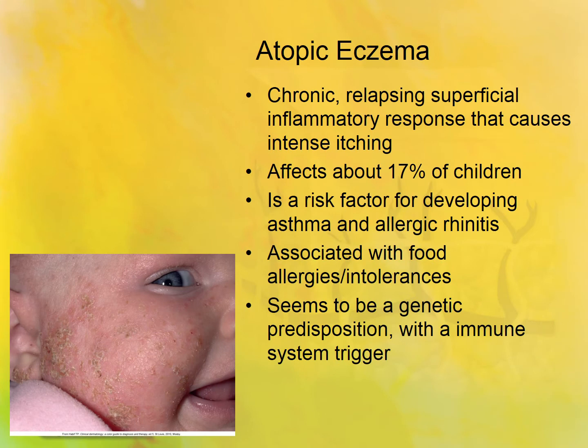Atopic eczema. This is a chronic relapsing superficial inflammatory type response. It causes a lot of itching and irritation for children. Remember the triad between asthma, allergic rhinitis, food intolerances, and eczema - food allergies, asthma, and eczema all kind of go together. There does seem to be a genetic predisposition, but there's some sort of immune system trigger - the immune system is just hypersensitive with eczema.